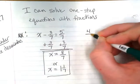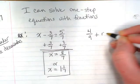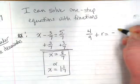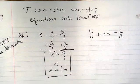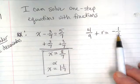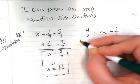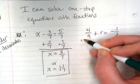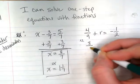We're going to try an example where we don't have like denominators. 4 9ths plus R equals negative 1 half. We need to have the same denominator, so we're going to convert both of these to 18. To convert this one to 18, I'm going to multiply both the numerator and denominator by 2. So I end up with 8 over 9...